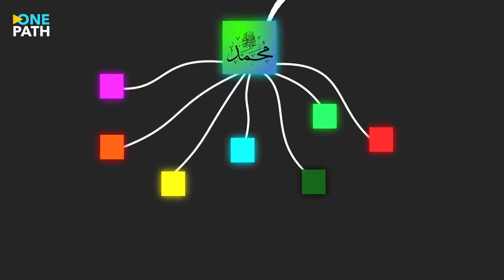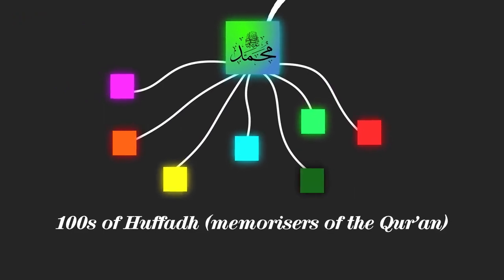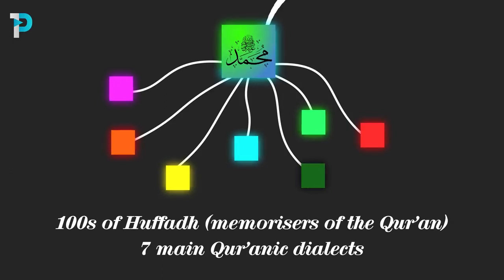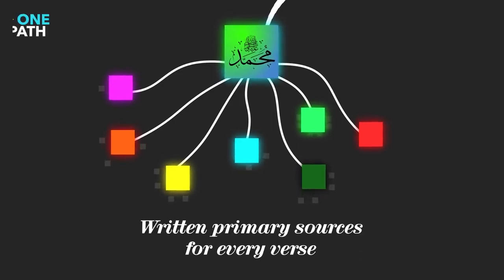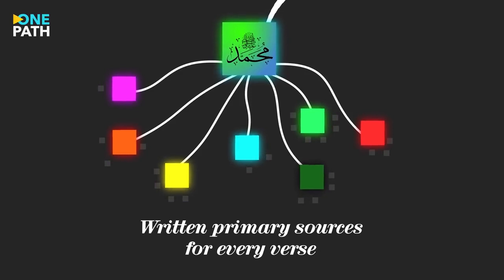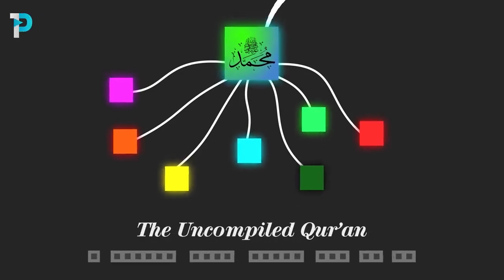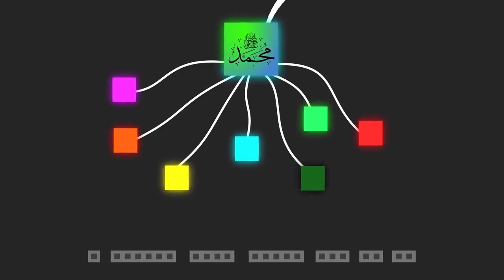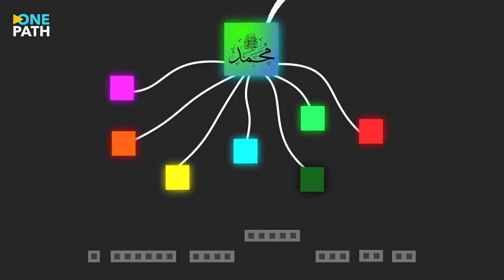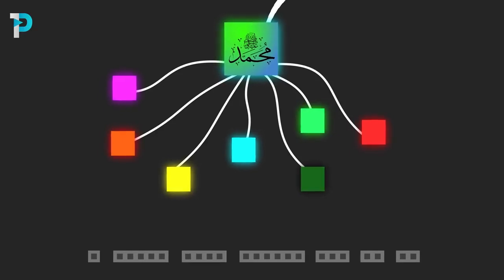So this was the state of the Qur'an at the death of the Prophet. Hundreds of companions who had memorized the complete Qur'an in seven official dialects, all of which were considered valid ways of reciting the Qur'an, as well as an incredible amount of written records that were held by the Prophet's companions throughout Medina and beyond. The placing of each verse within each chapter had been established by the Prophet before he died. But because each chapter functions as an independent unit, the companions had different ways of ordering the chapters themselves within the book as a whole.